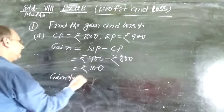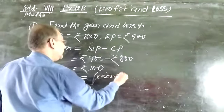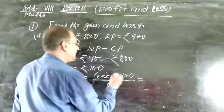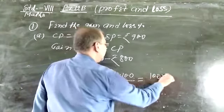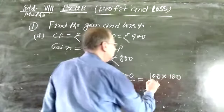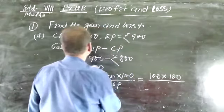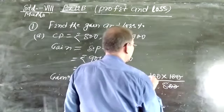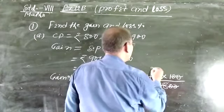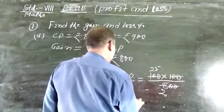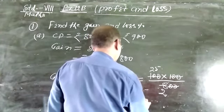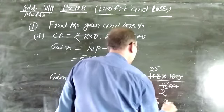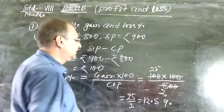Gain percent is equal to gain into 100 by CP. This is equal to 100 into 100 divided by 800, which equals 25 by 2, which is equal to 12.5. So gain percent is equal to 12.5 percent.